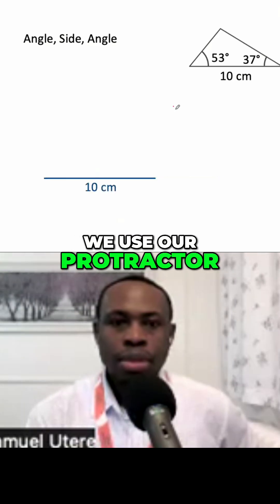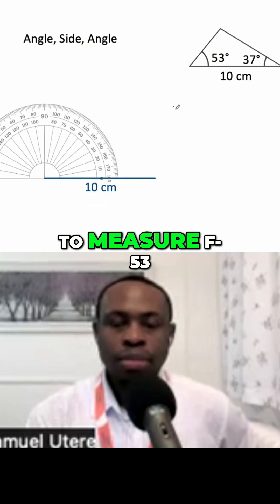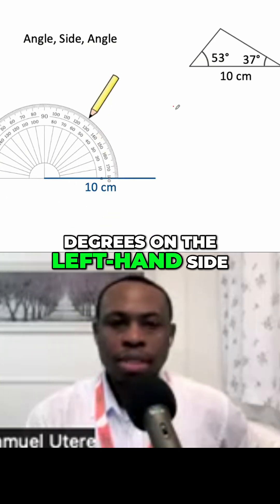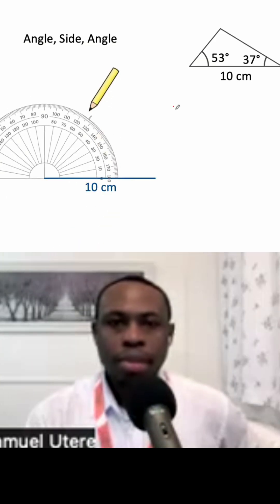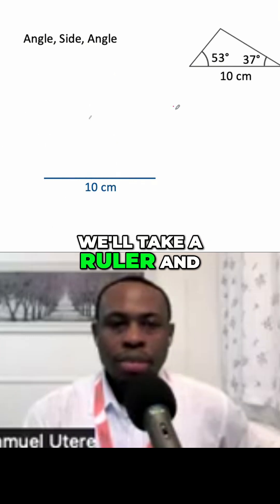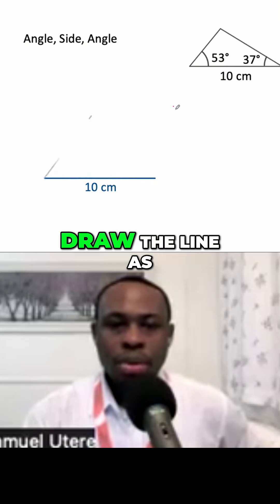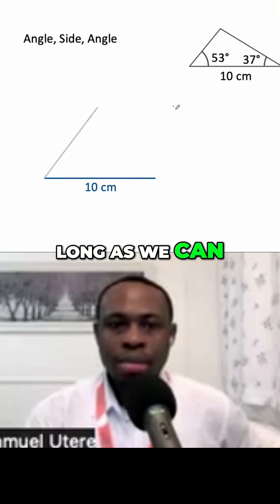We use our protractor to measure 53 degrees on the left hand side and we mark it. We'll take a ruler and draw the line as long as we can, but not so much.